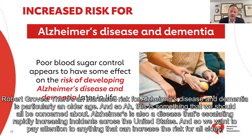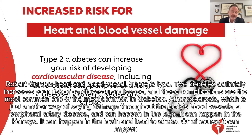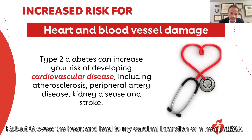There's an increased risk for Alzheimer's disease and dementias, particularly in older age. Alzheimer's is also a disease that's escalating rapidly with increasing incidence across the United States, so we want to pay attention to anything that can increase the risk for Alzheimer's. Heart and blood vessel damage — type 2 diabetes definitely increases your risk of cardiovascular disease. Atherosclerosis, which is damage throughout the body's blood vessels, peripheral artery disease can happen in the legs, kidneys, brain and lead to stroke, or it can happen in the heart and lead to myocardial infarction or a heart attack.